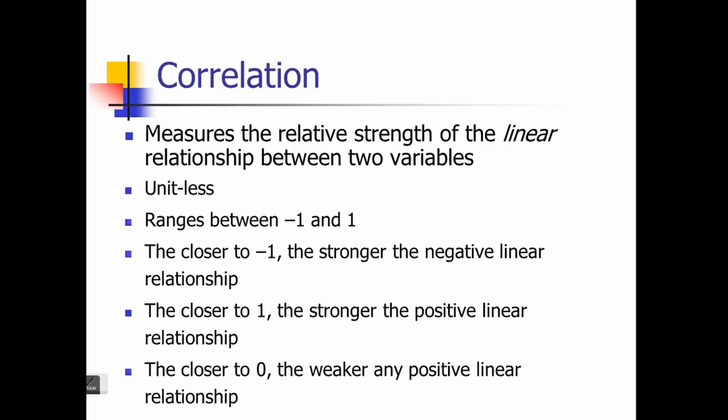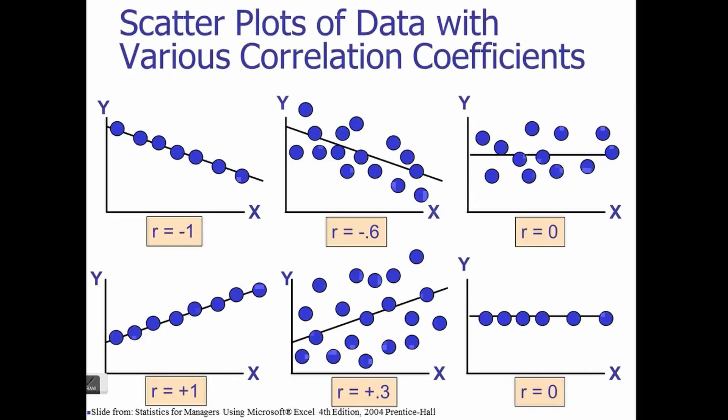From correlation we will move to linear regression. Correlation measures the linear relationship between two variables; linear regression does something similar but there are many additional things you can do with linear regression that you cannot do with correlation. Looking at the first graph, the correlation is minus one — there is a strong negative relationship. The line passes through the data points between x and y, which are two variables.